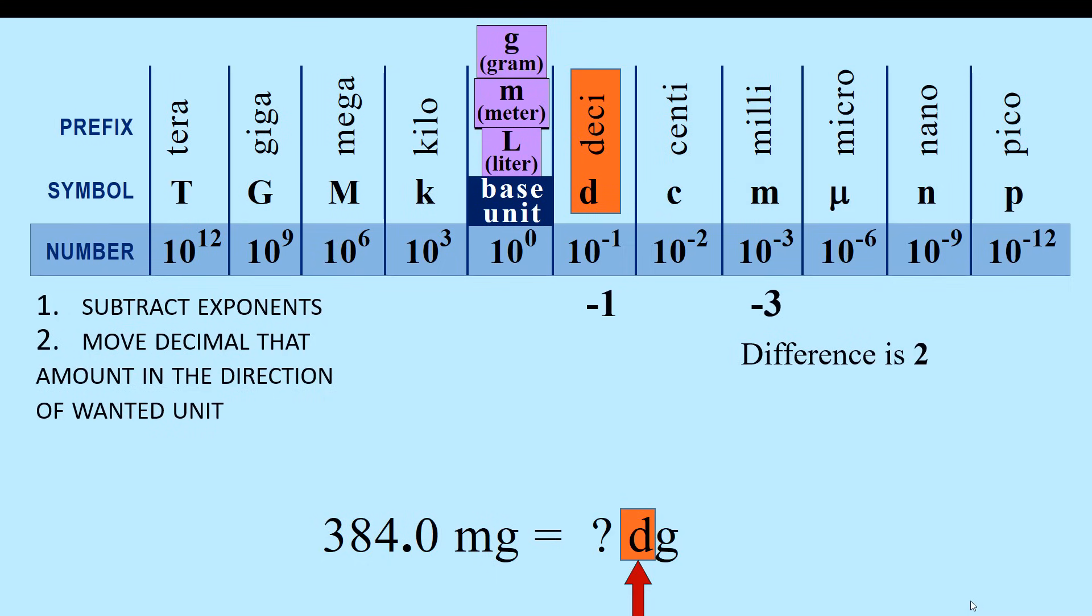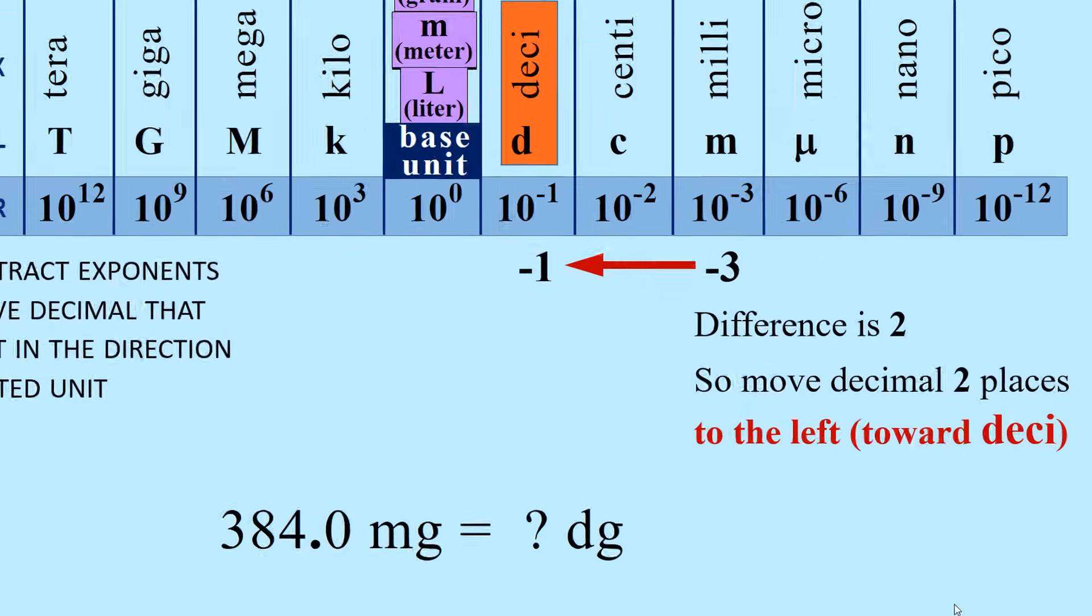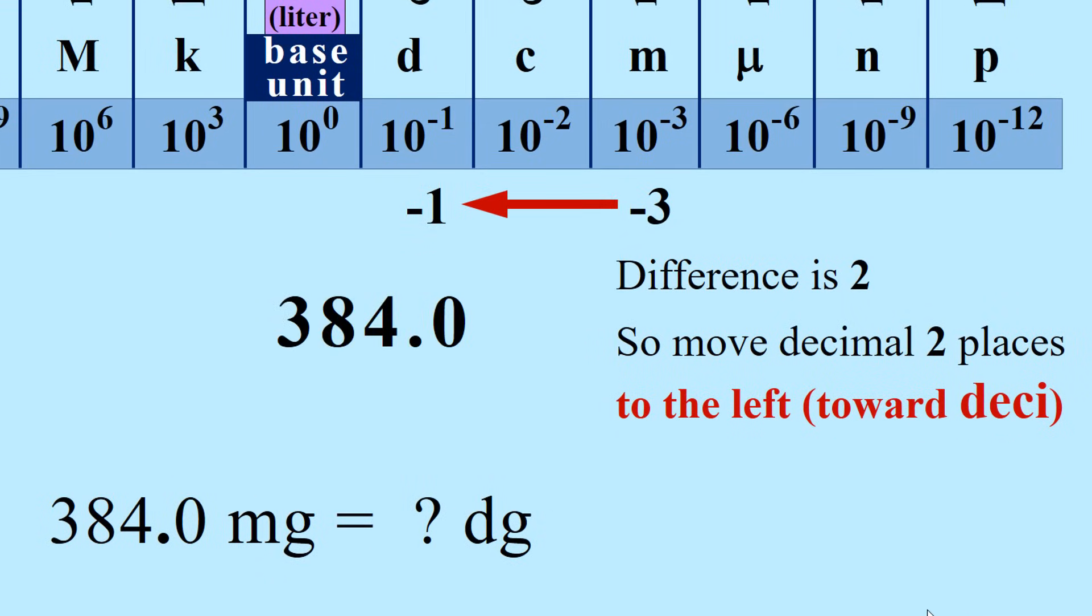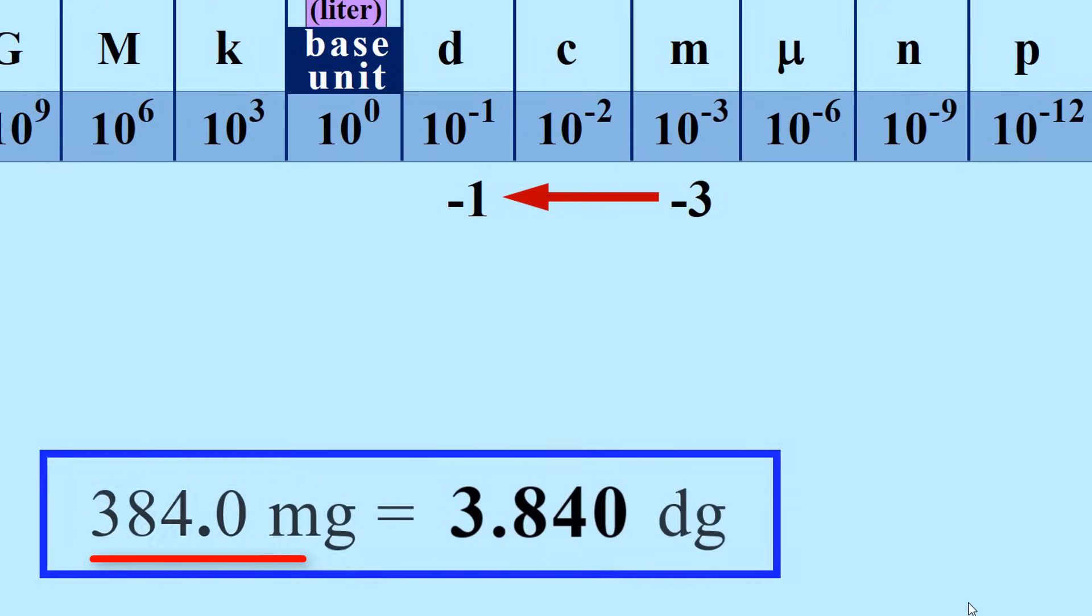Deci is the wanted unit, so move the decimal two places to the left, toward deci. Starting with 384.0, the decimal is moved two places to the left, which gives 3.840. 384.0 milligrams is equal to 3.840 decigrams.